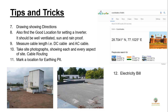After that, find a good location for setting the inverter — it should be well-ventilated and protected from sun and rain. Also measure the DC and AC cable length required on the site. Take photographs showing each and every aspect of the site. Mark out cable routing in photographs. Also importantly, mark the location for the earthing pit.